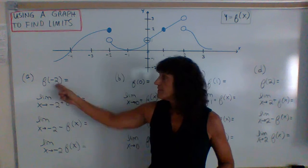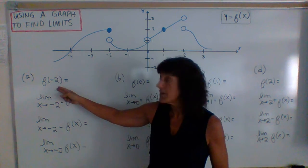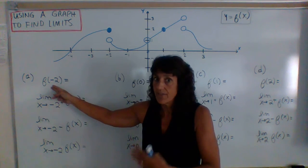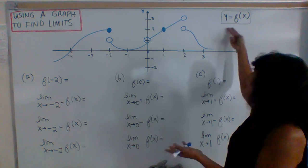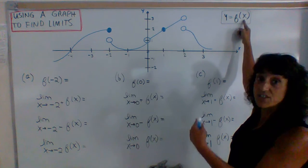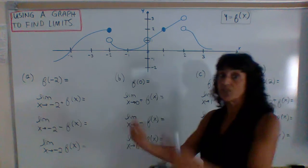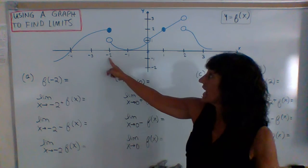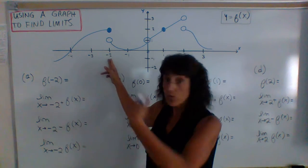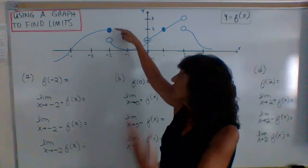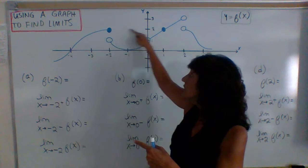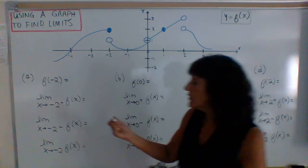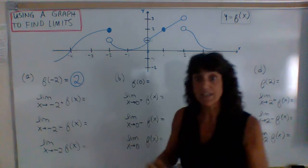Starting with letter A, we want to know what the function value is at negative 2. Now the function value — when you see this notation, the number in the parentheses is telling you the x coordinate and you want to give them the y. So f of negative 2: on our graph, we go to where x is negative 2. There's an open and closed circle; the closed circle is the defined value. Going across, the y coordinate would be positive 2. So f of negative 2 is positive 2.